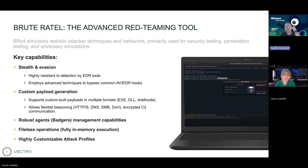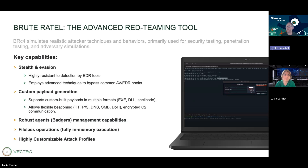You will be able to generate a custom payload, so the payload is named Badger. And you can use EXE format, DLL, or directly a shellcode. And you can also use different protocols to establish a C2 communication — for example, HTTP, HTTPS, DNS, SMB, and TCP traffic.